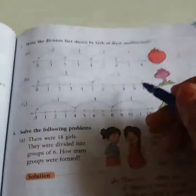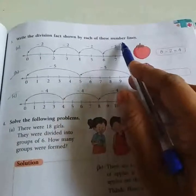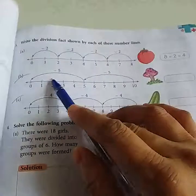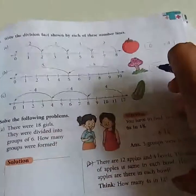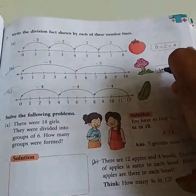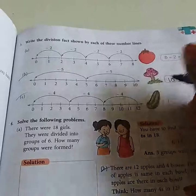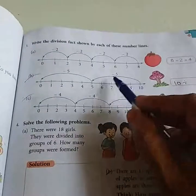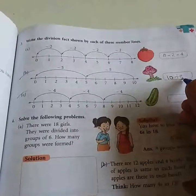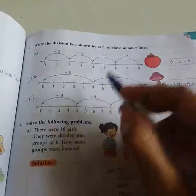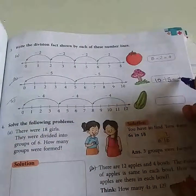Now, question number 3. Write the division fact shown by each of these number lines. Here we can see a number line is given till 10. So, first number to write is 10. Aapki number line kahaan tak ja rahe hain? Usko pehle likhto. Aap ye dekhiye ismein se kitna subtract ho raha hai? Ismein minus 5 ho raha hai. That means 10 ko 5 se divide lagana hai. And 5 kitni baar aa raha hai? Ek baar, do baar. That means 2 is the answer.